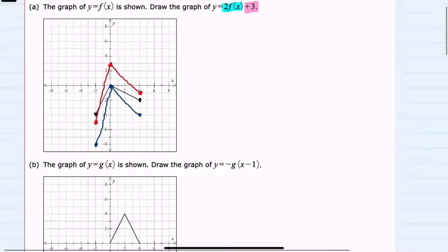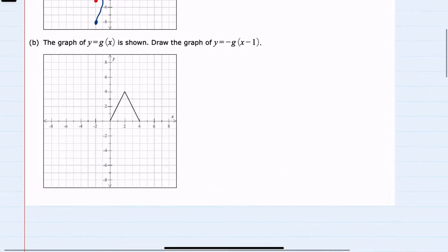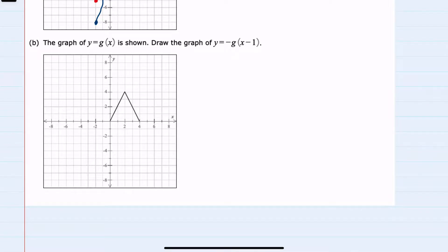And then for graph B, we're given g of x and asked to graph y equals negative g of x minus 1. I'll start here with the x minus 1. We recall that that has the effect of shifting our graph one space to the right. So each of these points get shifted one space to the right to create the new g of x minus 1.